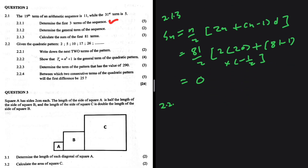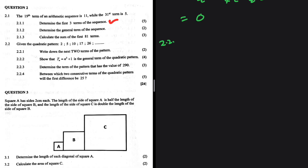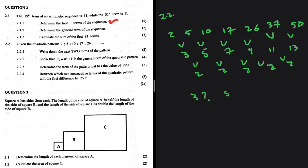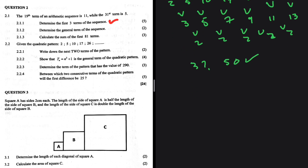Part 2.2 is a quadratic pattern — we need to find the next two terms. The sequence is 2, 5, 10, 17, 26. The first differences are 3, 5, 7, 9, and the second difference (constant) is 2. So the next first differences are 11 and 13, giving terms 26 plus 11 equals 37 and 37 plus 13 equals 50. The next two terms are 37 and 50.